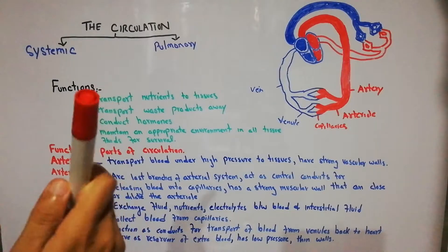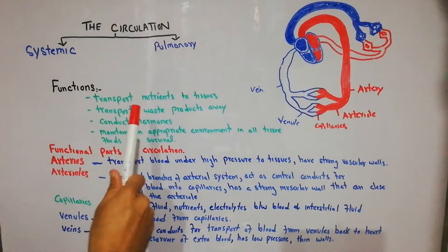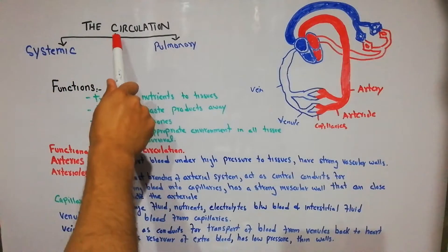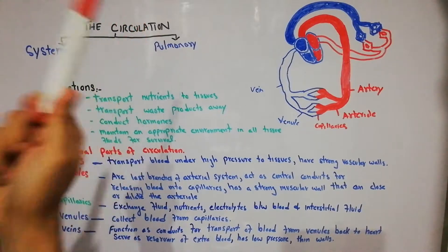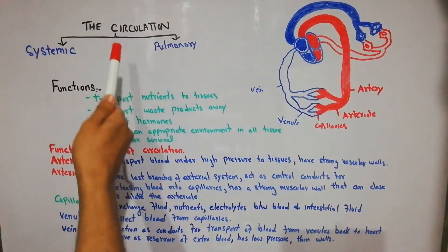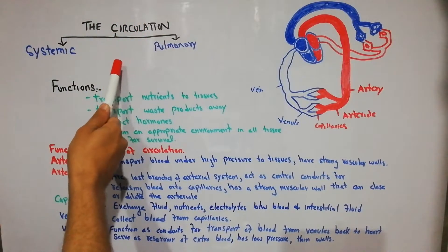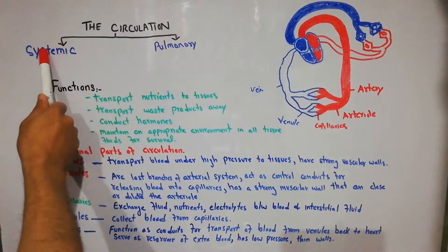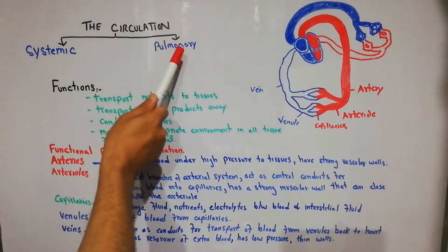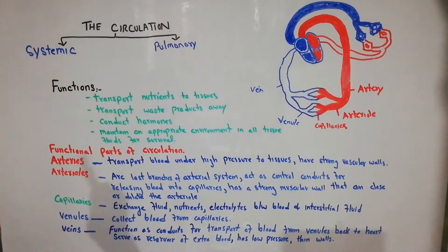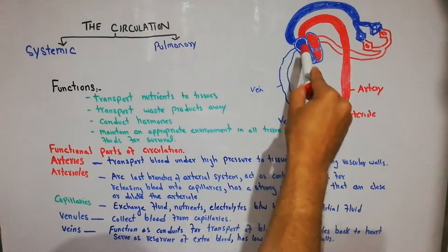Today we are going to start a new series of lectures about the circulation or circulatory system. The circulation in the human body is basically divided into two types: the systemic circulation and the pulmonary circulation.